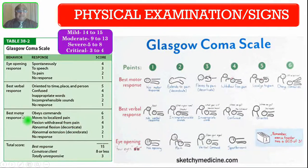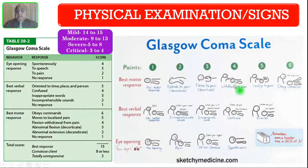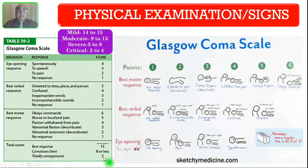The next is motor response. If the patient obeys commands, the score is 6. If the patient localizes pain, the score is 5. Flexion withdrawal from pain scores 4. Abnormal flexion — decorticate rigidity — scores 3. Abnormal extension, meaning decerebrate posturing, scores 2. No response scores 1. The maximum GCS score is 15, and the minimum is 3, even in an already deceased patient.